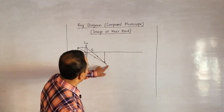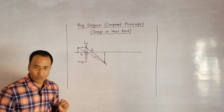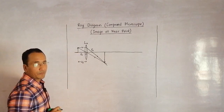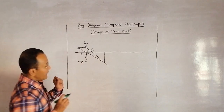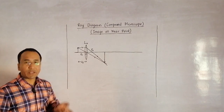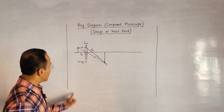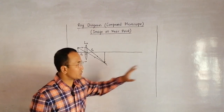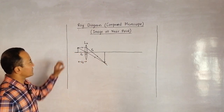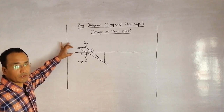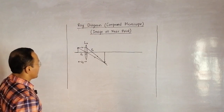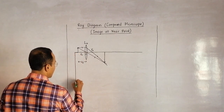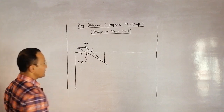Now we have a choice of where to form the image. I will form the first image right at the left border. I can manipulate the distance — if I make it large, the image ends here; if smaller, it can extend further. I want it to be four to six times larger than the object. So let me draw it as large as I can — this is the final image.